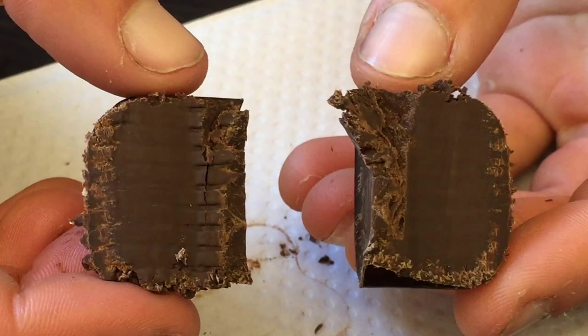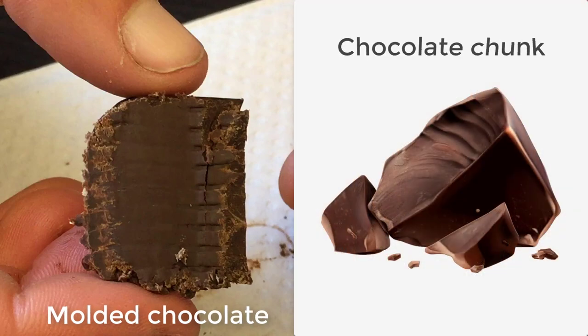In the first comparison, the molded chocolate and original chocolate chunk look the same inside. They are both dense, solid pieces of chocolate.